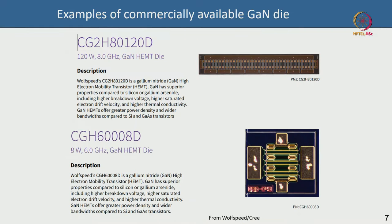Here are two examples of commercially available GaN RF dies available today. Most of these companies are based in the US or Europe, and there are import restrictions because this is strategically sensitive military technology, so some devices can only be purchased up to a certain frequency, power, or volume. These are from a company called Wolfspeed, formerly Cree, whose RF division was recently acquired by MACOM.